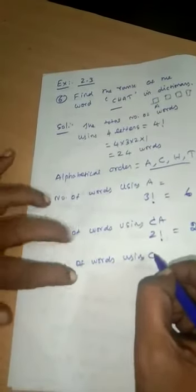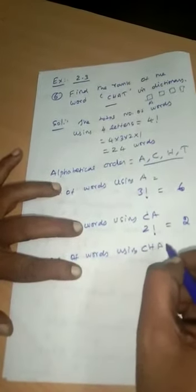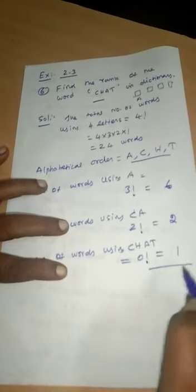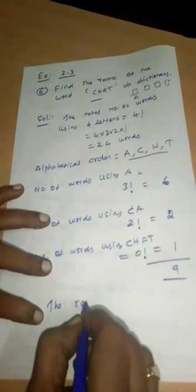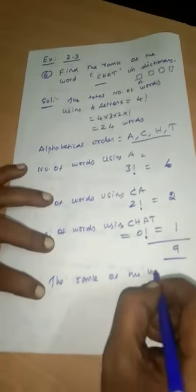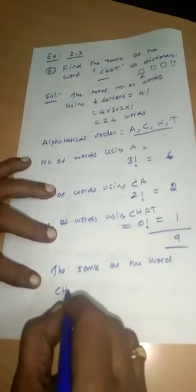Next is number of words starting with C, H. Next is A in the dictionary, so C, H, A is filled. The remaining one letter also comes, therefore CHART comes next. There is no letter remaining, therefore zero factorial, which is one. The total is six plus two plus one equals nine. The rank of the word CHART is ninth place.